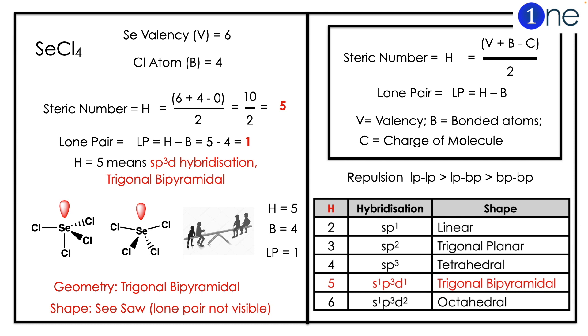With one lone pair, the geometry is trigonal bipyramidal, but with the lone pair it becomes a seesaw structure. So the structure of SeCl₄ is seesaw.